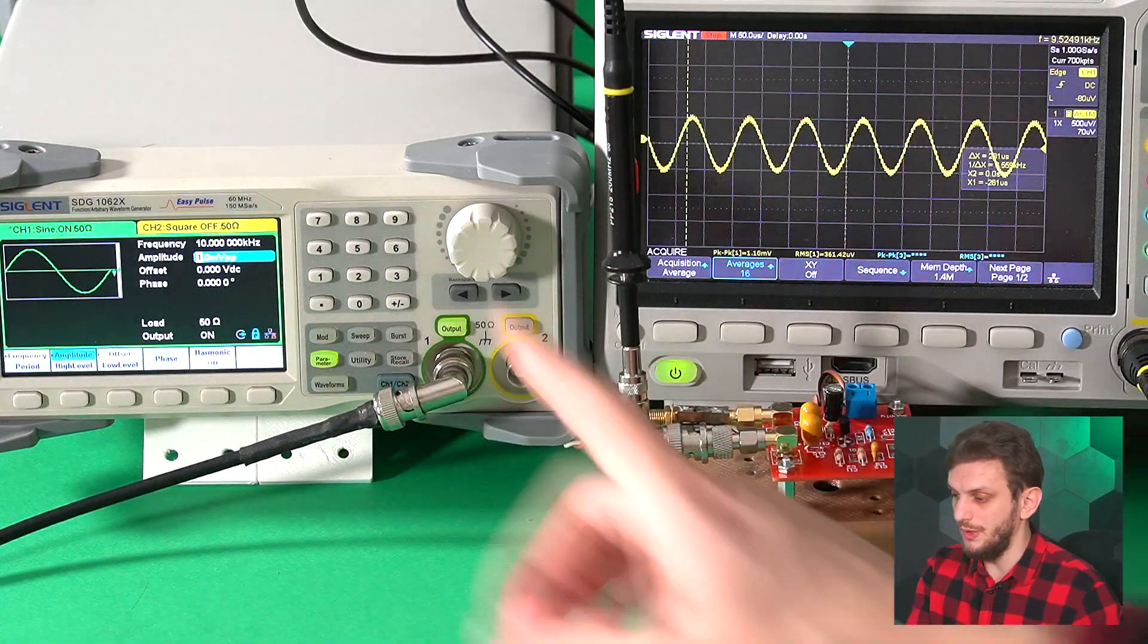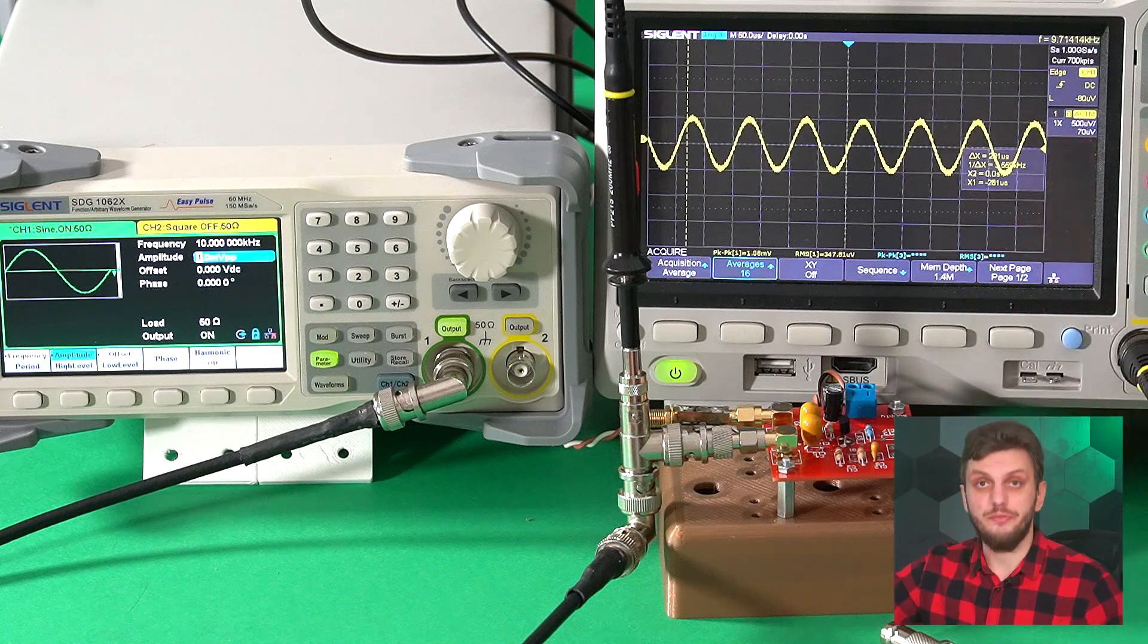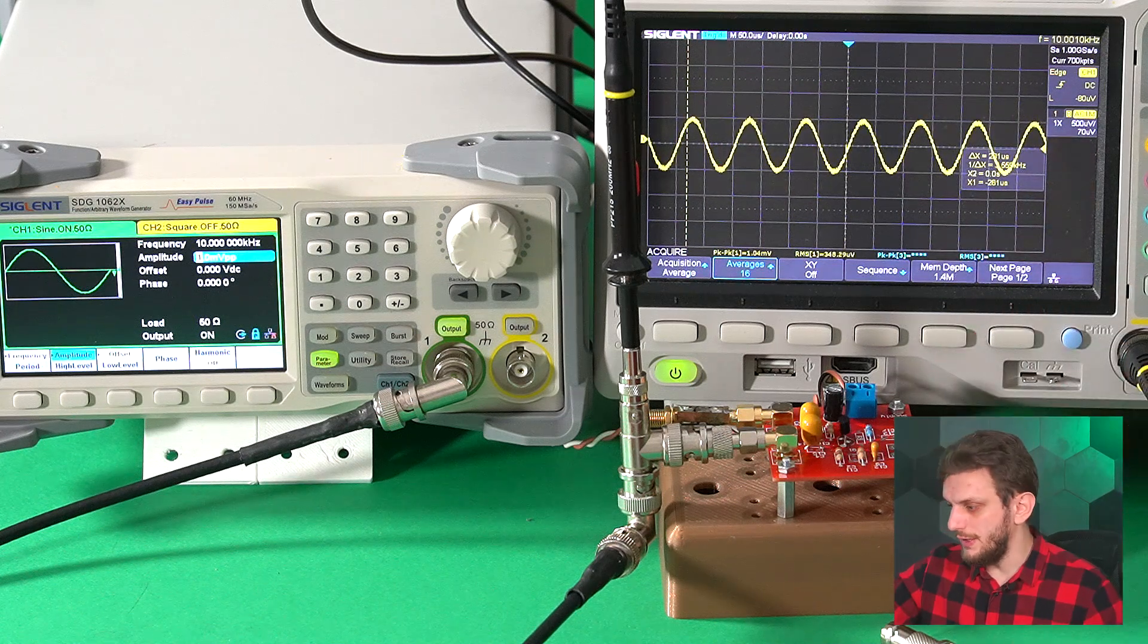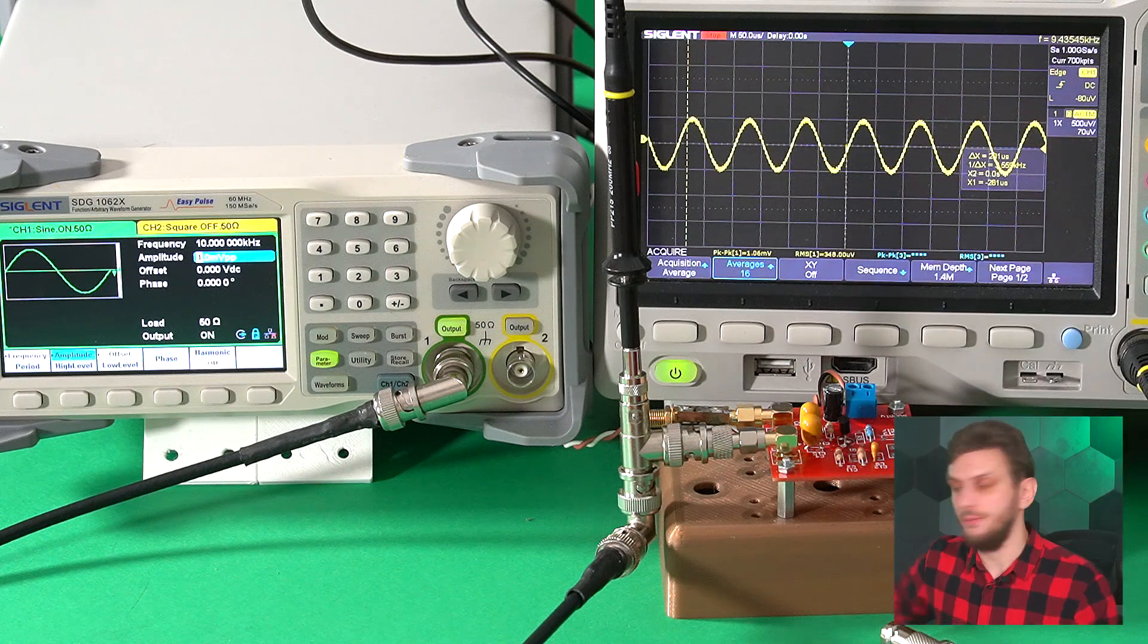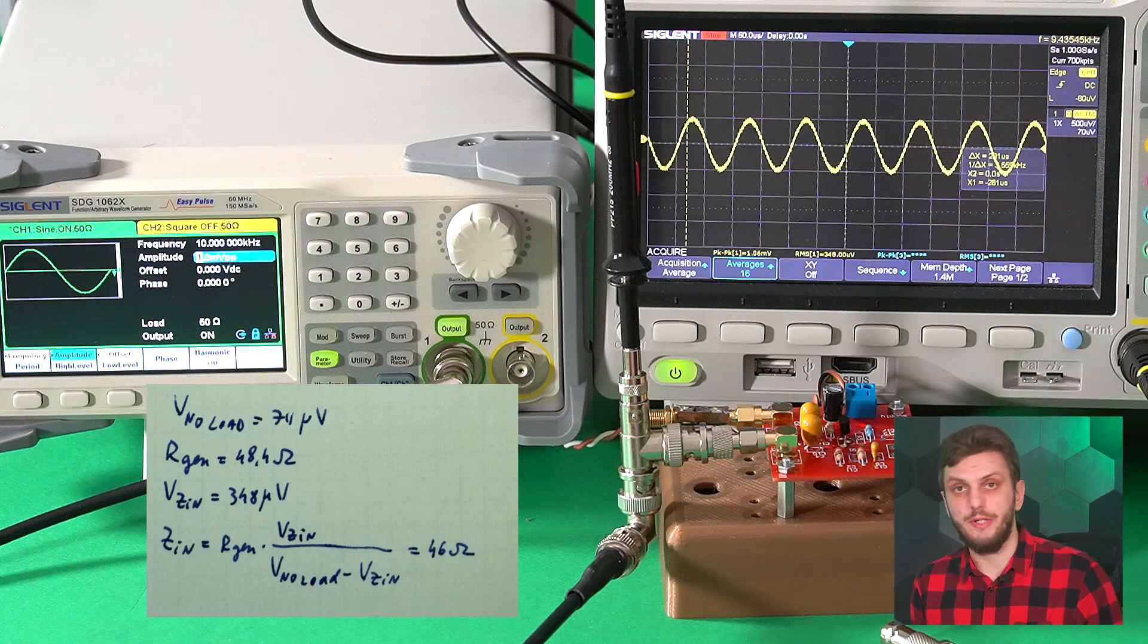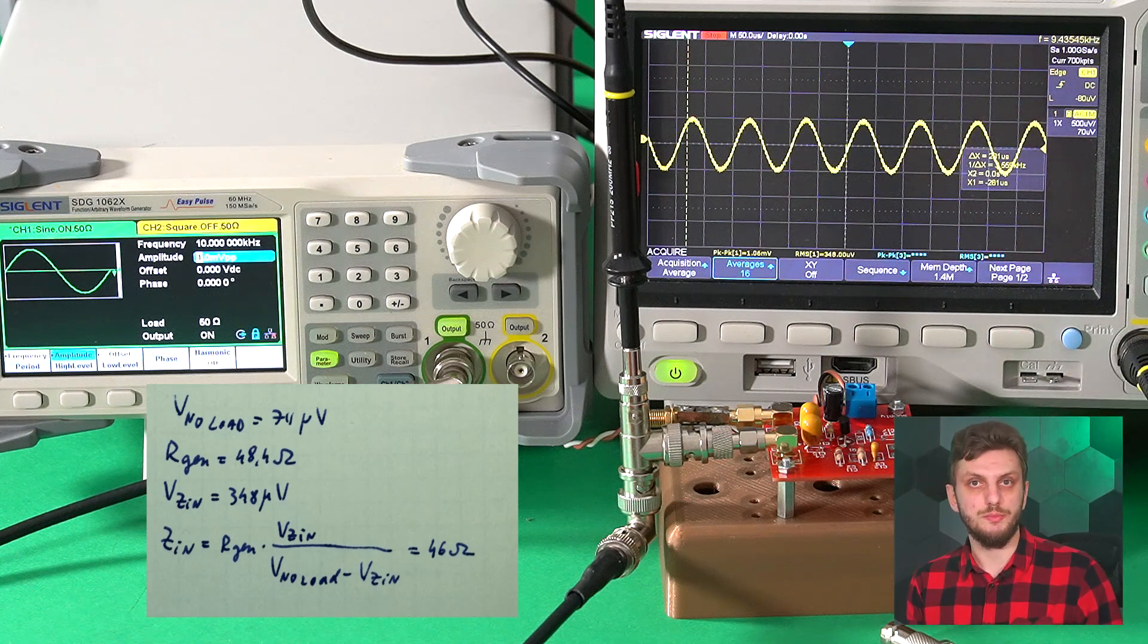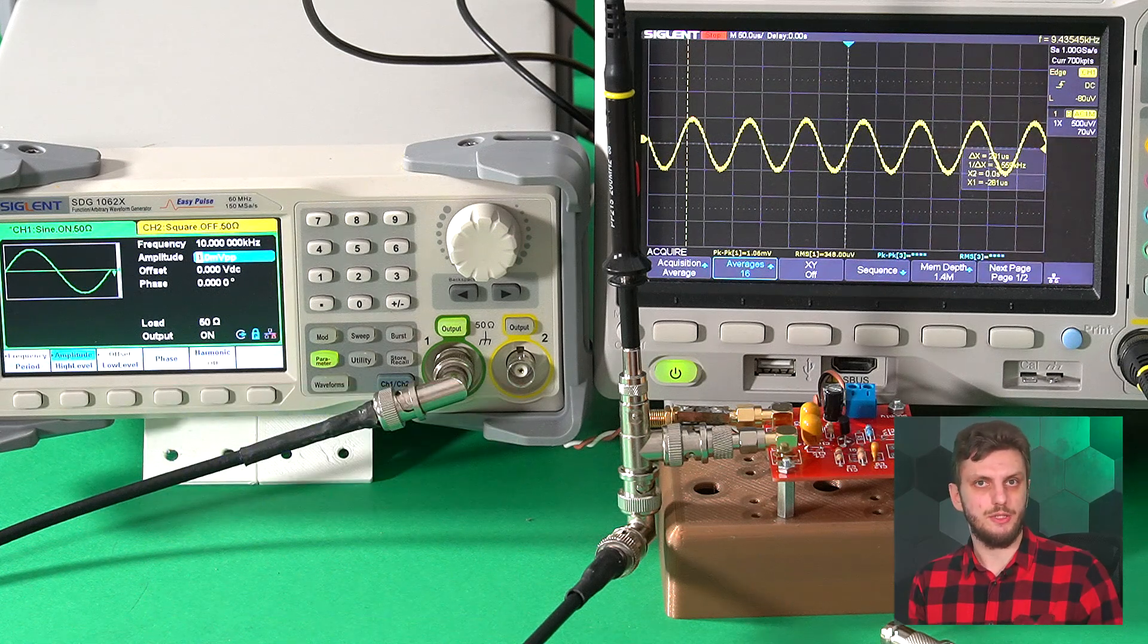Now knowing this value, we can now see the signal attenuation when the amplifier is connected. We know the output signal, we know the output impedance, and when we connect the unknown load of the amplifier, we can see that we are getting about 348 microvolts, and from this we can work out that the input impedance of the amplifier is about 46 ohms. It's a bit higher than what we were expecting from the calculations, but it's close enough.